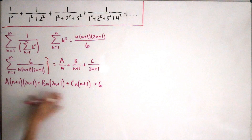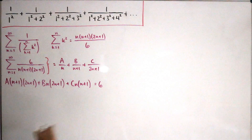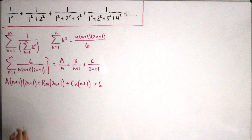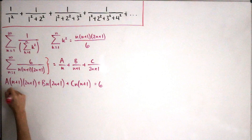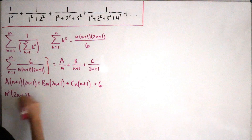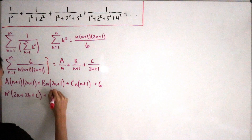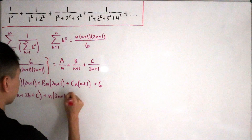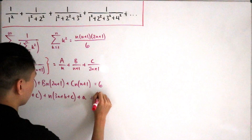We multiply everything out and factor, grouping by powers of n. The coefficient of n² gives (2A + 2B + C), the coefficient of n gives (3A + B + C), and the constant term gives A. Setting these equal to their respective values from the right-hand side gives our system.